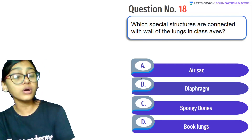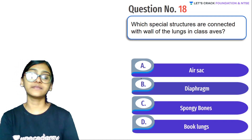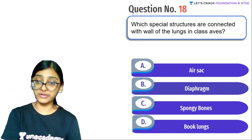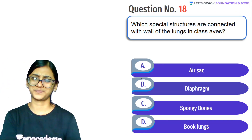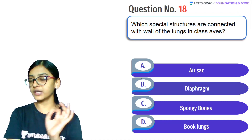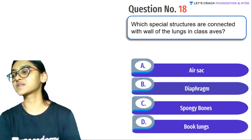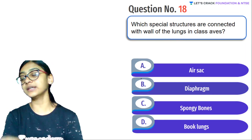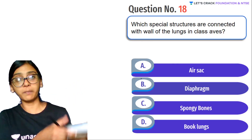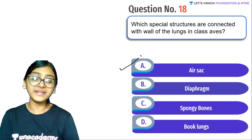Next question: Which specialty structures are connected with the walls of the lungs in birds? Options: air sac, diaphragm, spongy bones, book lungs. Book lungs literally look like books — if you search online you'll see book lungs have slits just like book pages. The answer is A — air sac. Air sacs are connected with the walls of the lungs so birds can breathe and also reduce body weight.